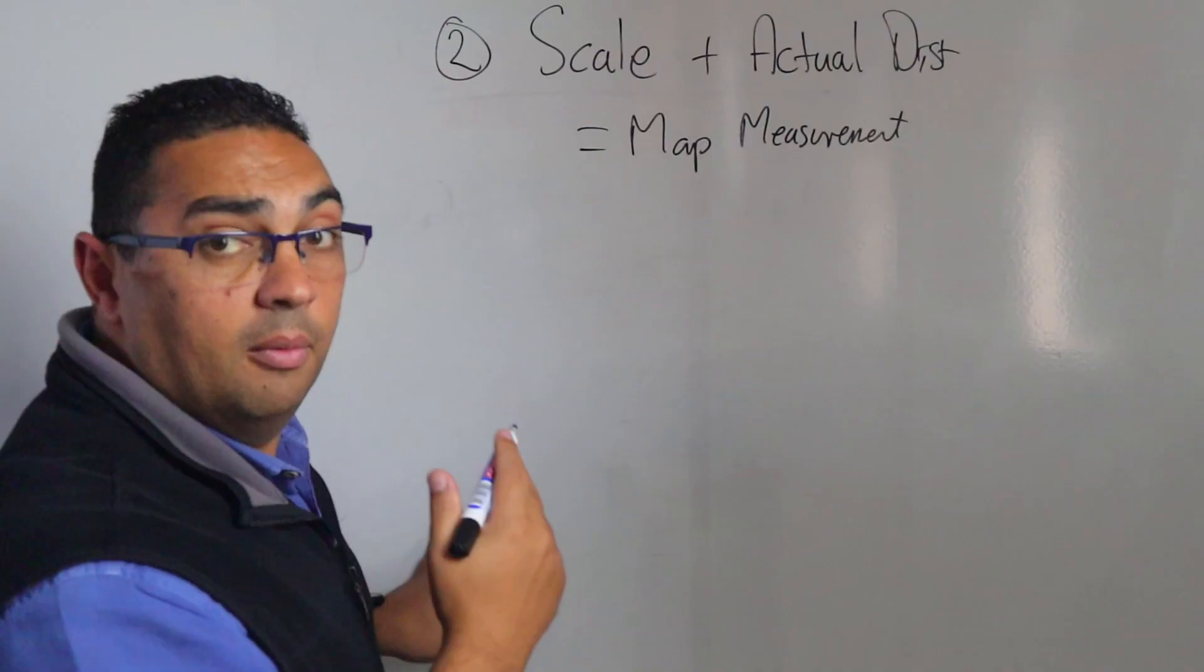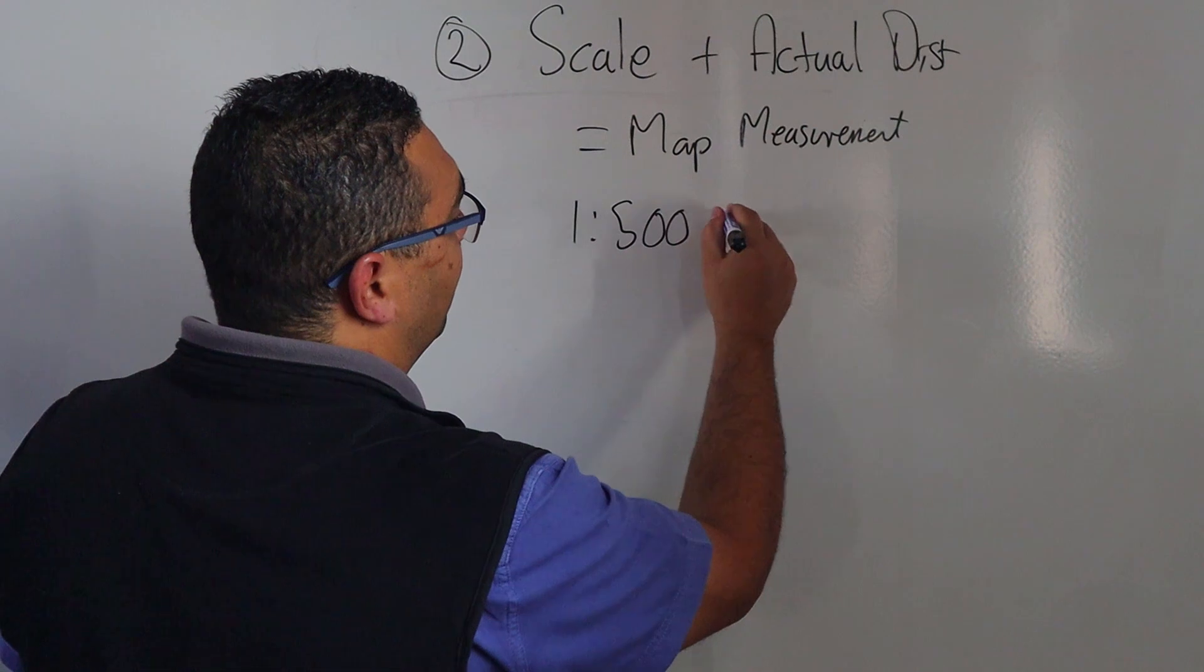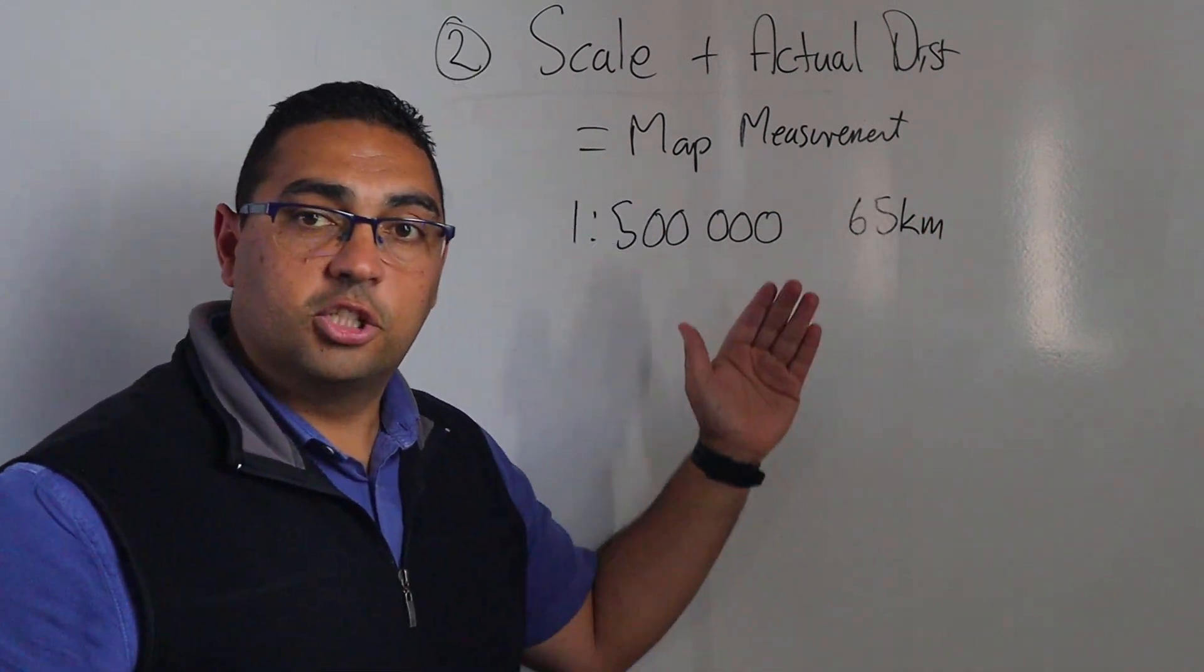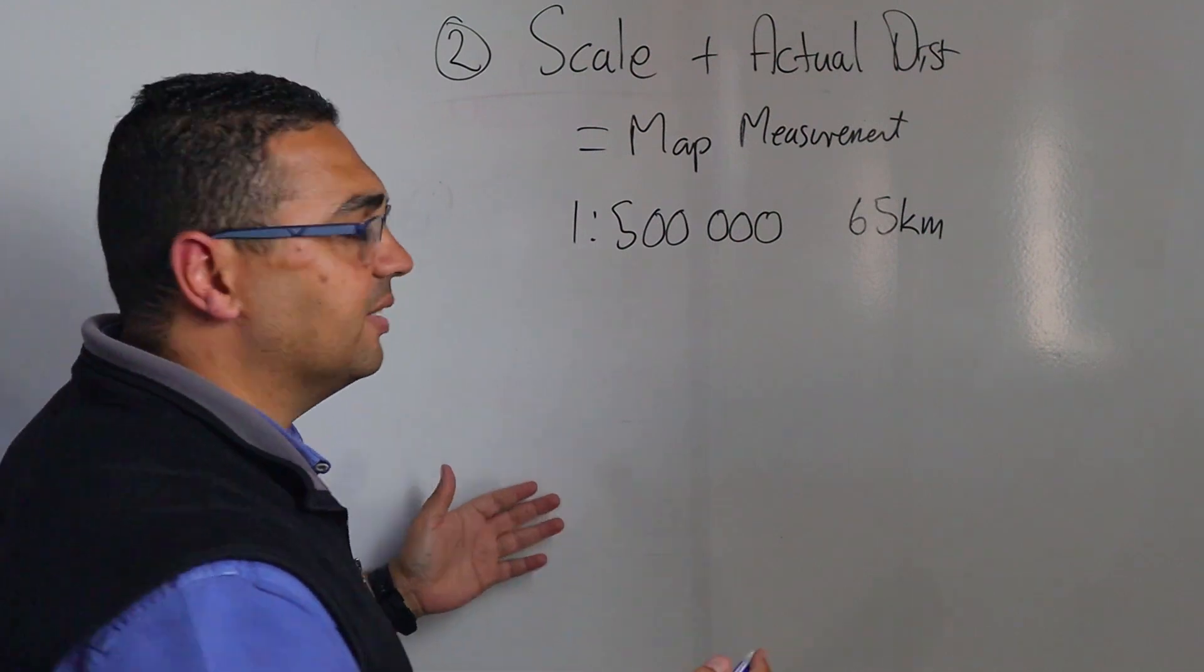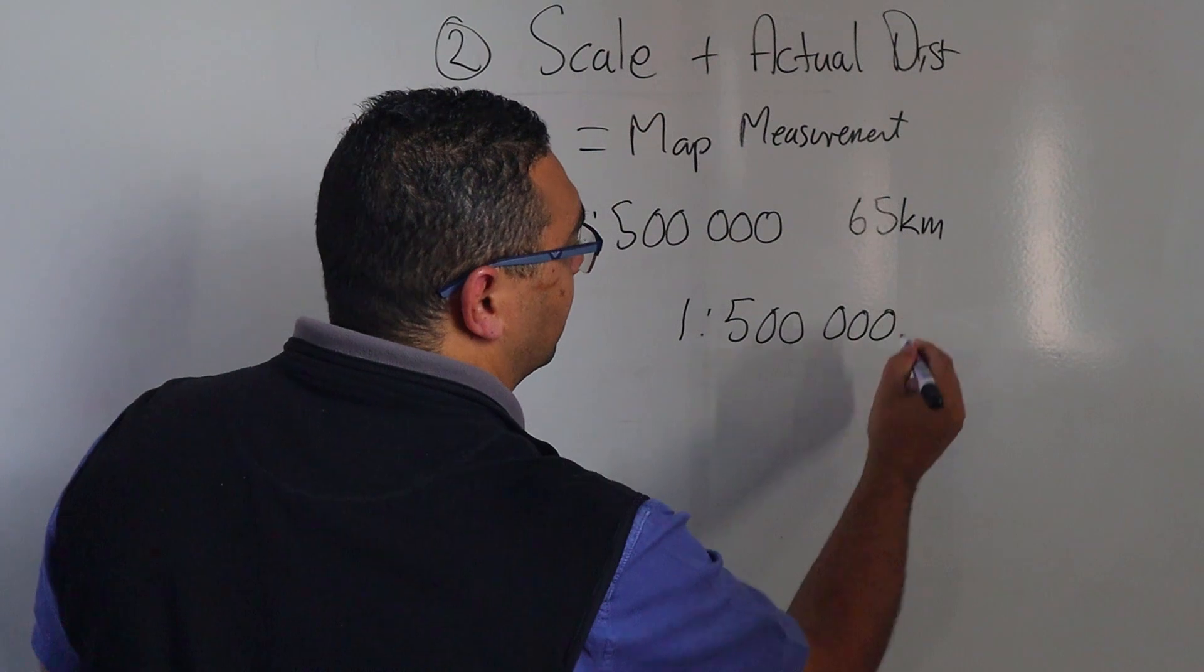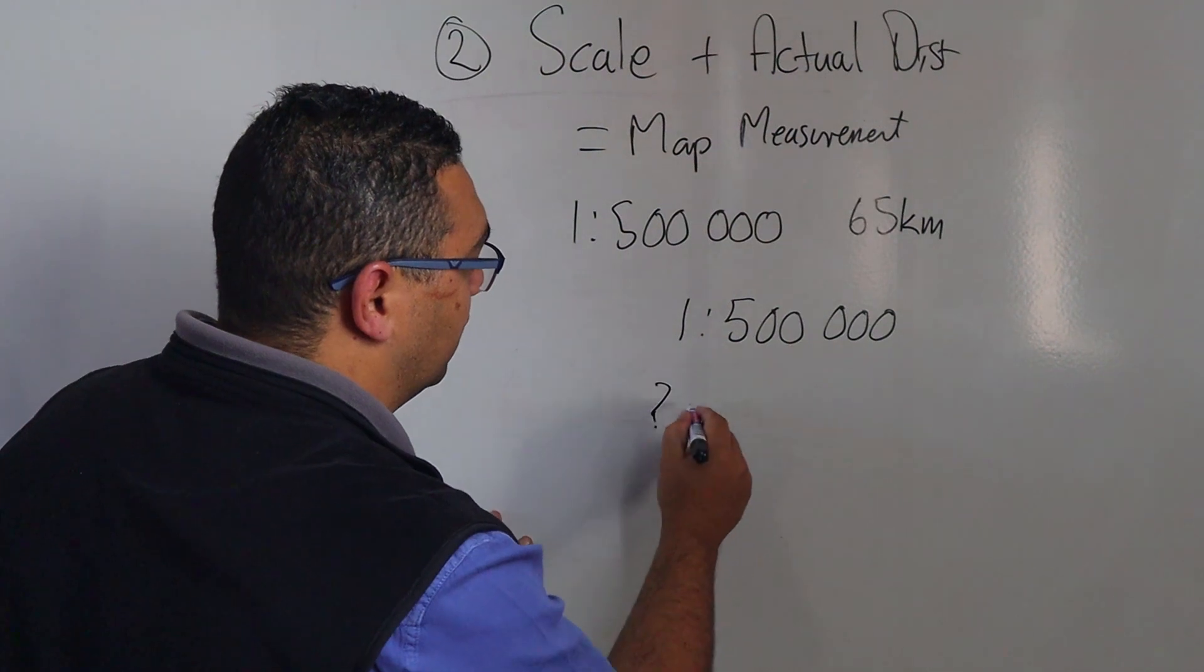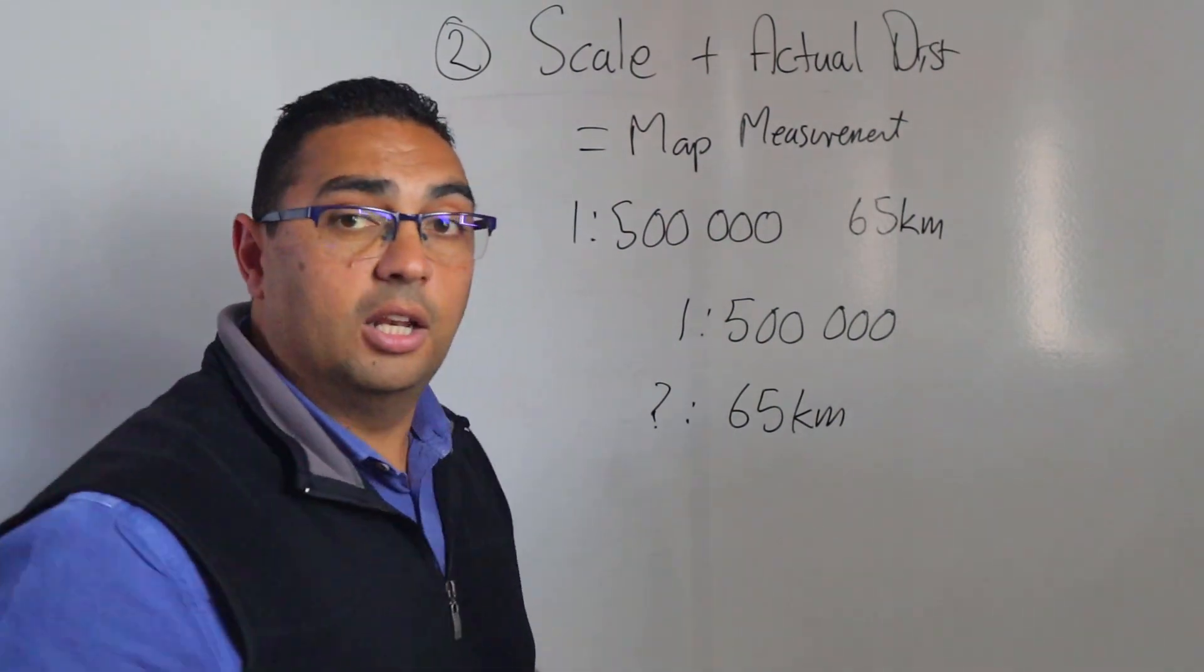So let's look at our example. My scale is 1 to 500,000. My actual distance is 65 kilometers. So I have those things. What am I going to do with it? Well I'm going to do what I did previously. I'm going to bring my scale down 500,000, but this time I don't have my ratio to start off with so I'm going to put a question mark there, and I've got my actual distance of 65 kilometers.